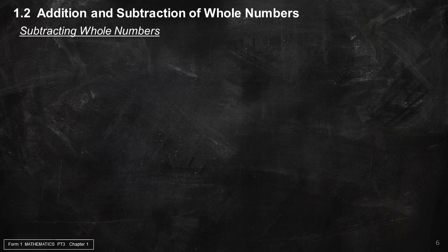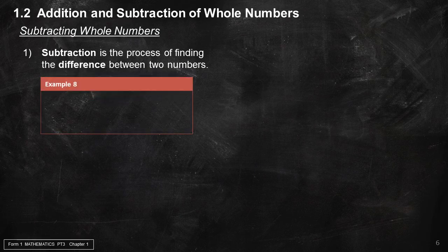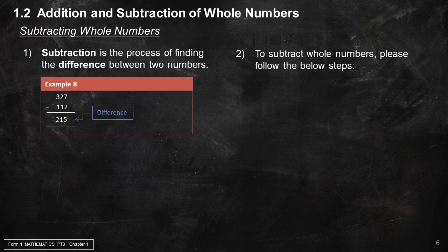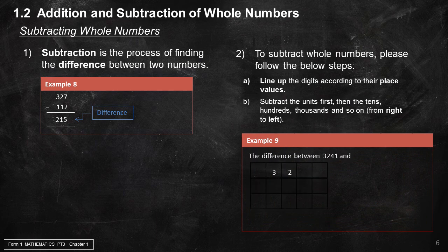Subtracting whole numbers: subtraction is the process of finding the difference between two numbers. Example 8: 327 − 112 = 215. To subtract whole numbers, follow these steps: A) Line up the digits according to their place values. B) Subtract the units first, then the tens, hundreds, thousands, and so on, from right to left. Example 9: the difference between 3,241 and 654 is 2,587.